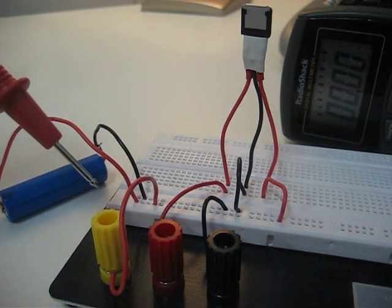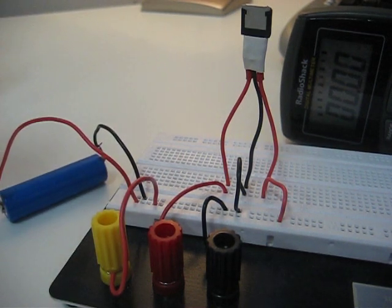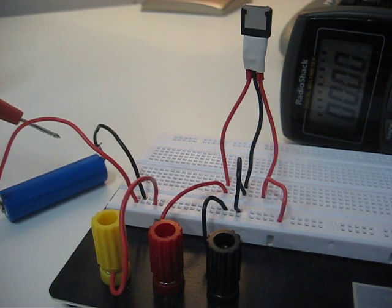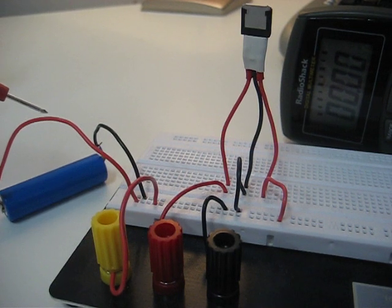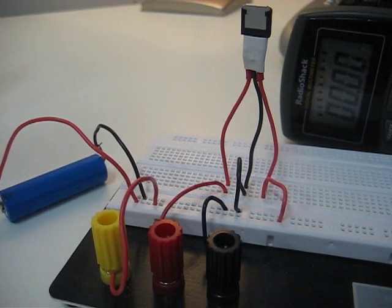But with regular voltage regulators, their dropout voltage can be up to an entire volt. So if you have a power source and you want your output to be slightly less than your input, a regular voltage regulator is not going to work. That's where a low dropout voltage regulator comes into place.